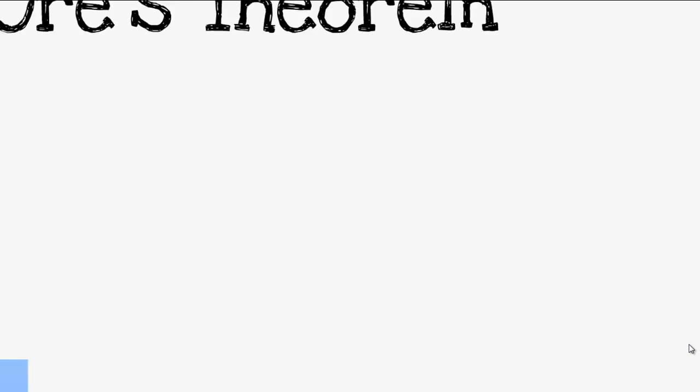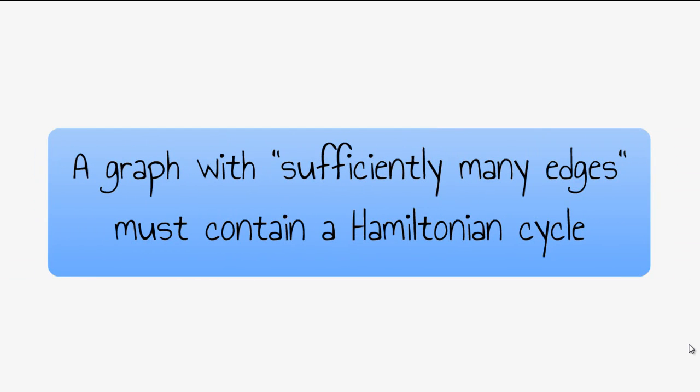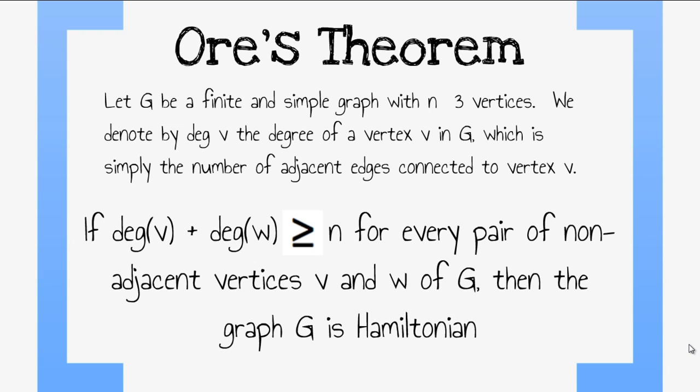Orr's Theorem. Orr's Theorem gives a sufficient condition for a graph to be Hamiltonian, essentially stating that a graph with sufficiently many edges must contain a Hamiltonian cycle. Let G be a finite and simple graph if N is greater than or equal to 3 vertices. We denote by DEG V the degree of a vertex V in G, which is simply the number of adjacent edges connected to vertex V.